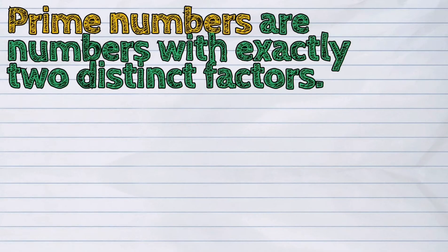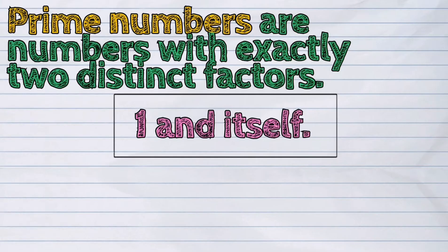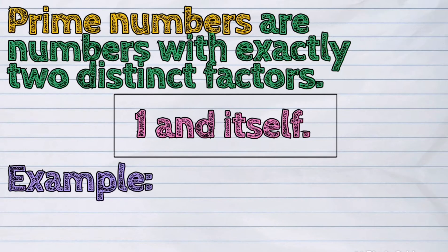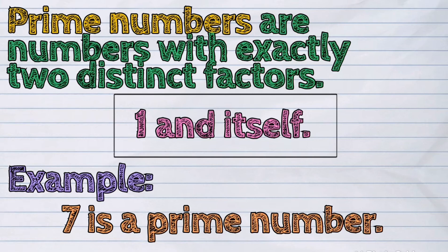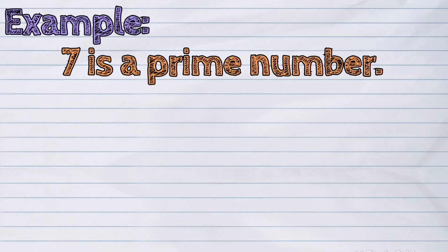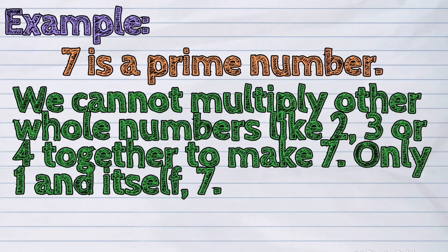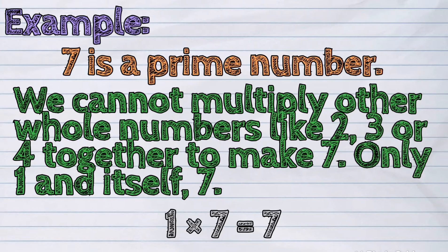Prime numbers are numbers with exactly two distinct factors, one and itself. Example: seven is a prime number. Why is it so? We cannot multiply other whole numbers like two, three, or four together to make seven. Only one and itself, seven.